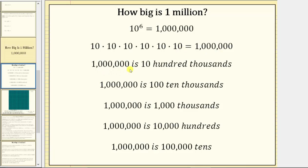We can also say one million is 10 hundred thousands. One million is 100 ten thousands. One million is one thousand thousands. One million is 10 thousand hundreds, and one million is also 100 thousand tens.